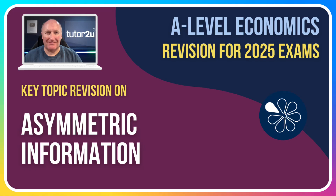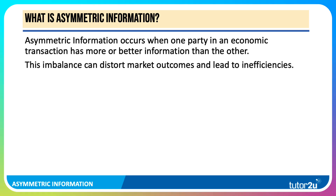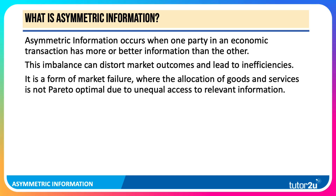Here's a quick revision video on asymmetric information. Asymmetric information happens when one party in an economic transaction — it could be the buyer, it could be the seller — has more or better information than the other. This imbalance of information can distort market outcomes and lead to inefficiencies. It's a form or cause of market failure, where the allocation of goods and services is not Pareto-optimal, due to unequal access to pertinent, relevant information.